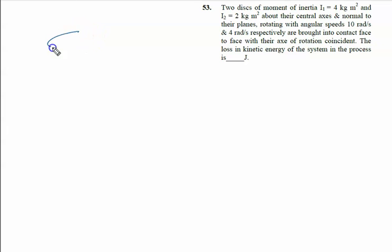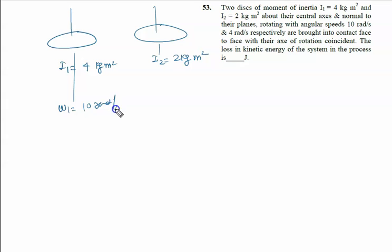Two disks of moment of inertia: the first is 4 kg·m² and the other is 2 kg·m² about their central axes. The moment of inertia is with respect to their center axis and normal to their plane, rotating with angular speeds ω₁ = 10 rad/s and ω₂ = 4 rad/s respectively. They are brought into contact face to face with the axis of rotation constant.